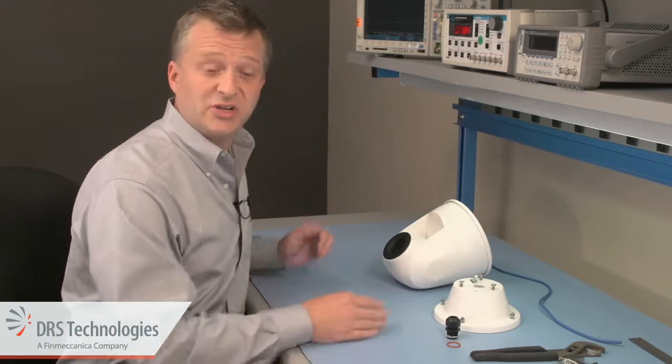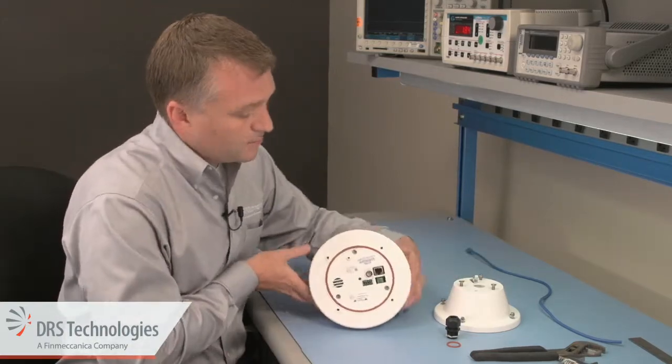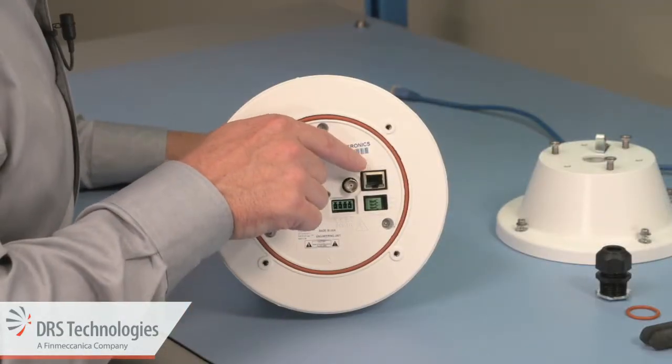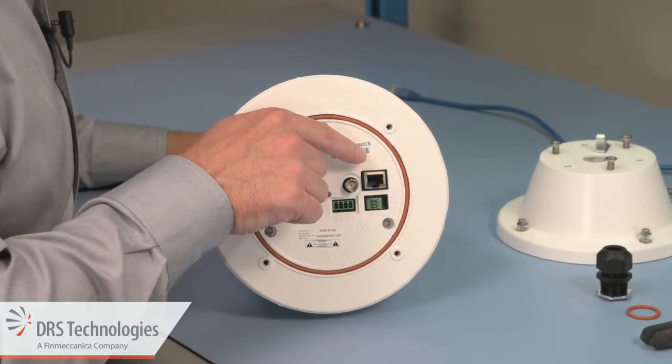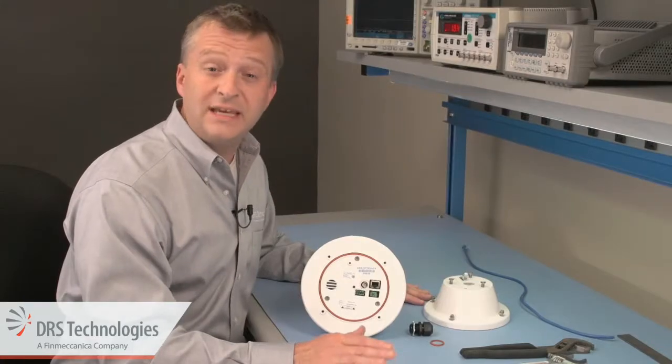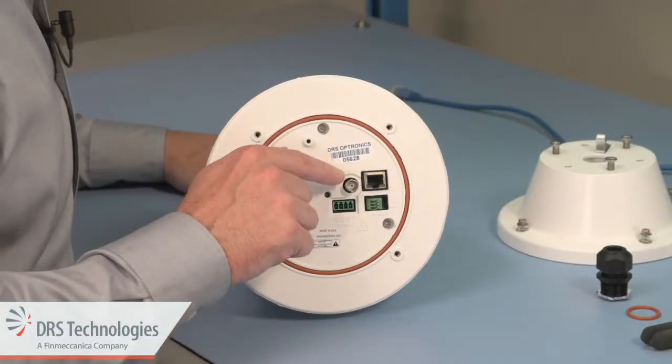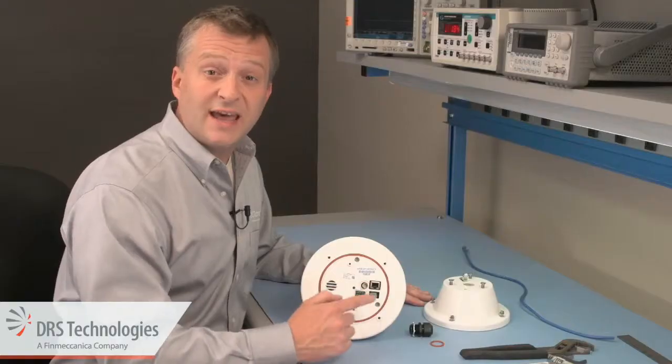Let's start by going over the connections on the camera. The Ethernet connection provides power and network connectivity when using the camera in a Power over Ethernet or PoE configuration. The BNC connector is utilized for analog video output.